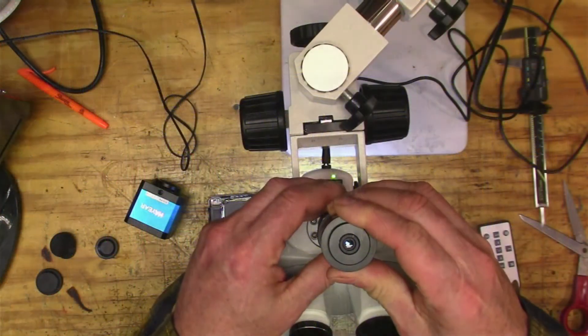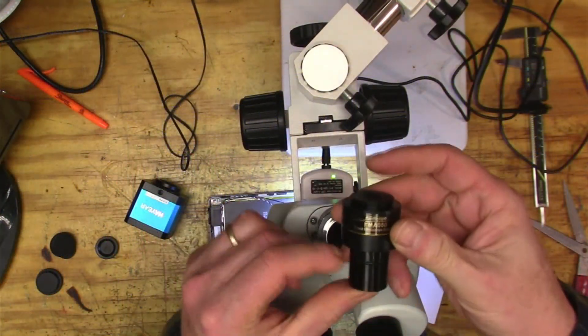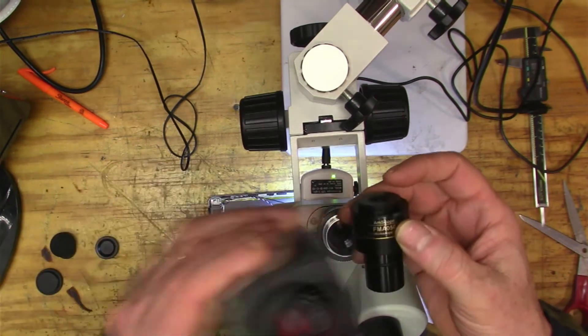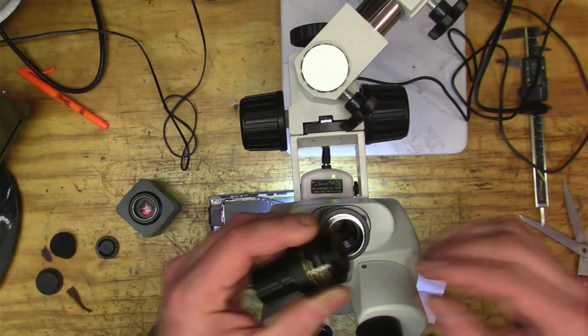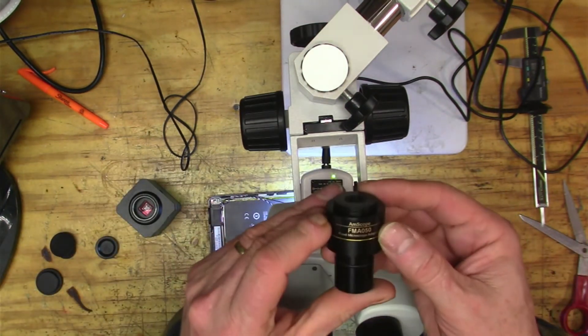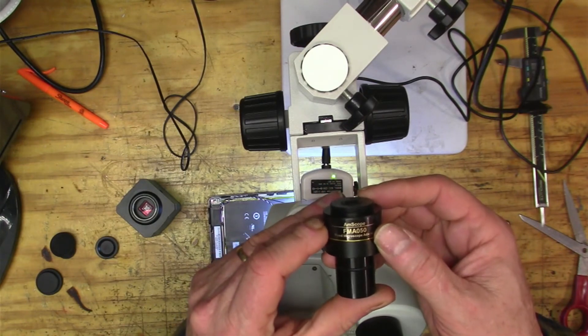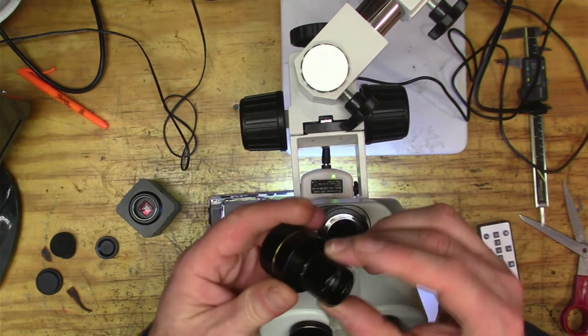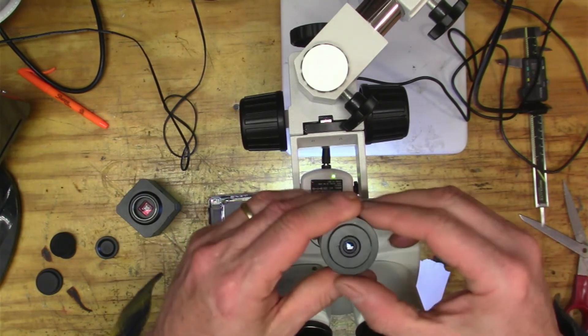So here's the part that I got to kind of connect the camera with the type C mount. So this is an Amscope FM A50-050, and it has a 0.5 magnification.